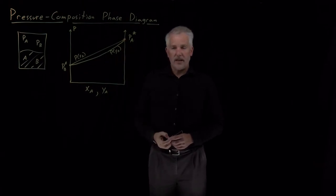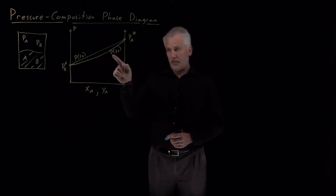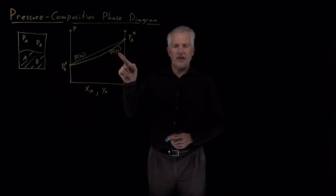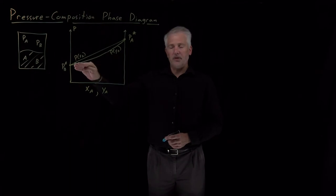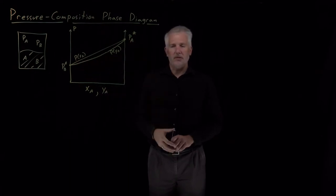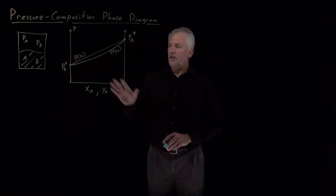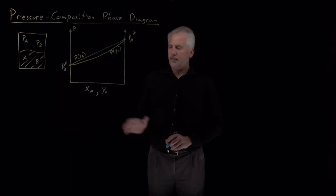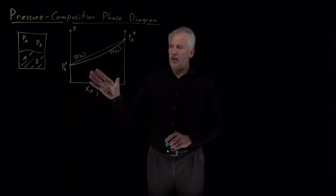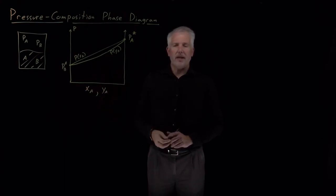If we instead think about how the pressure depends on the mole fraction in the vapor phase, Y sub A, that's not a straight line — it appears below the Raoult's law curve. It turns out this diagram is a phase diagram.